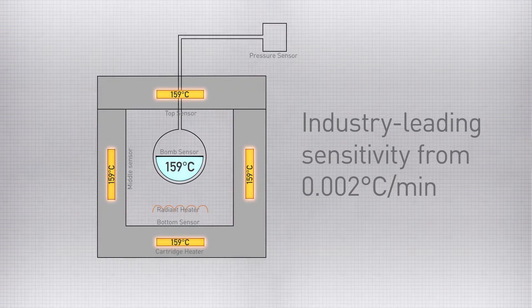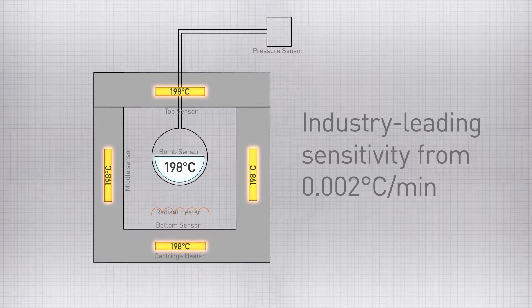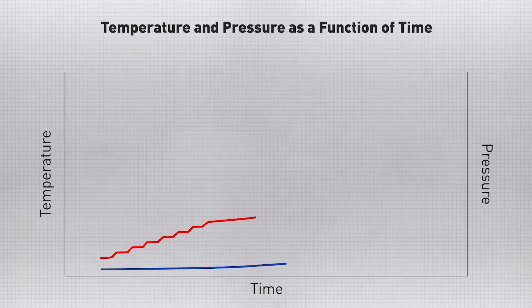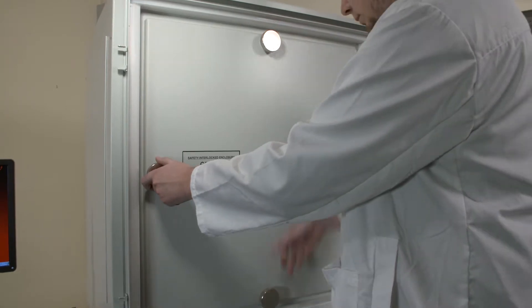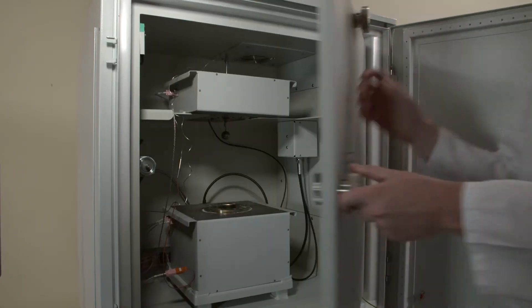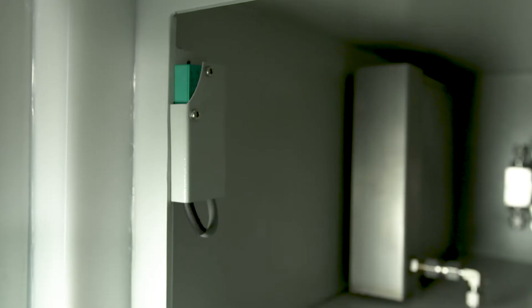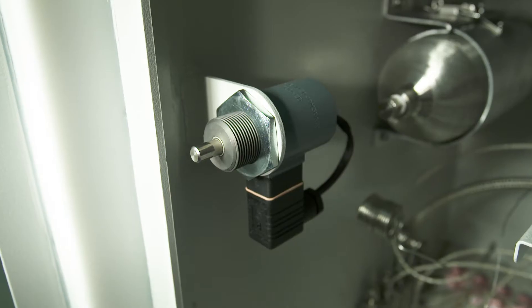The system has unparalleled adiabaticity, industry leading sensitivity and allows a very wide range of samples. The calorimeter is housed in a large 2mm reinforced steel blast-proof enclosure with multiple safety features including door sensor and an automatic door lock.